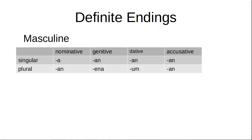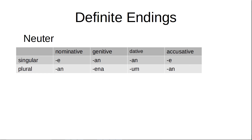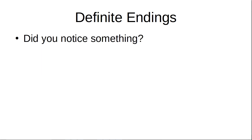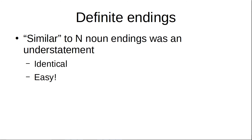The masculine definite endings: nominative singular -a, genitive -on, dative -on, accusative -on, plural -on, genitive -ena, dative -um, accusative -on. In the feminine: nominative singular -a, genitive -on, dative -on, accusative -on, plural -on, genitive -ena, dative -um, accusative -on. In the neuter: nominative/accusative singular -a, genitive -on, dative -on, plural nominative/accusative -on, genitive -enna, dative -um. I feel like I've said this all before — because when I said these are similar to the n-noun endings, that was an understatement. They're actually identical. So that's something you don't have to memorize — just remember it's identical.